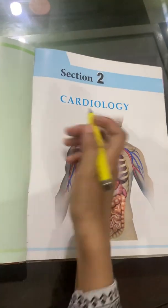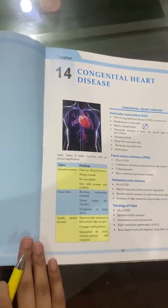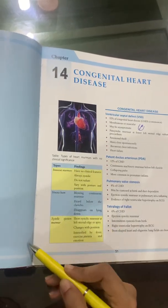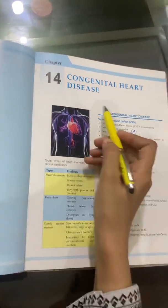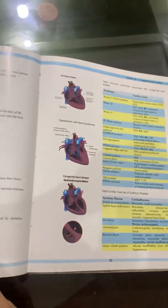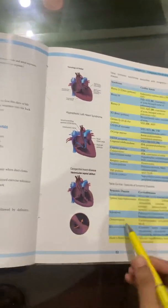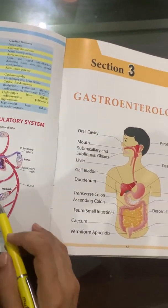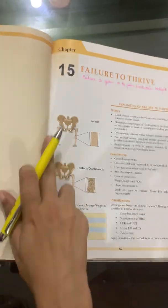Then Section 2 consists of Cardiology, and in this section different diseases of the cardiological system of children are discussed. First of all, congenital heart diseases of children and different diseases, their interpretation, investigation, and differential diagnosis are discussed.